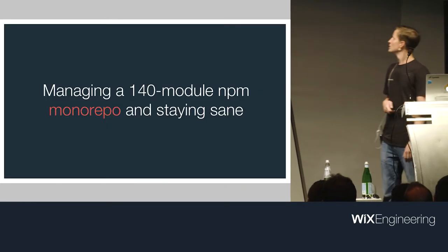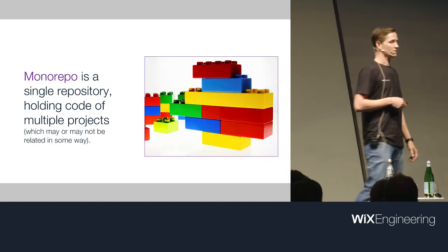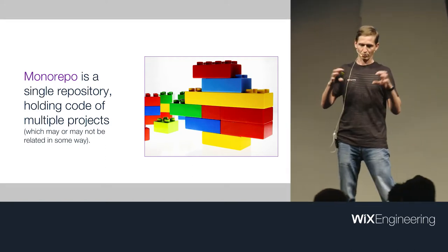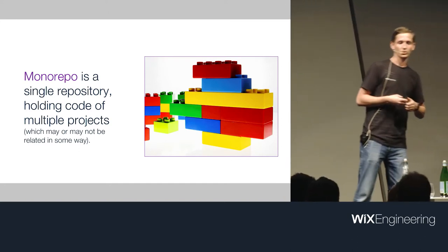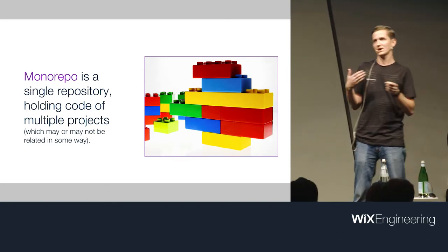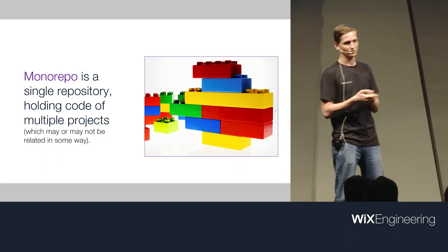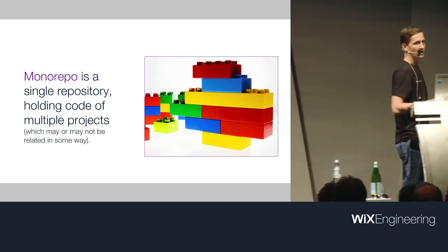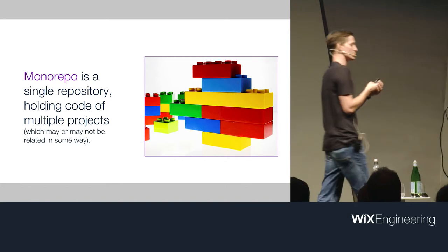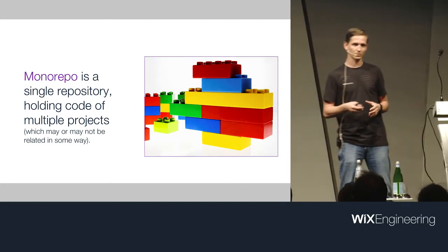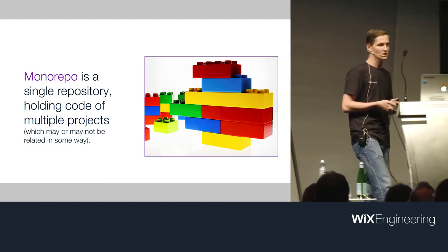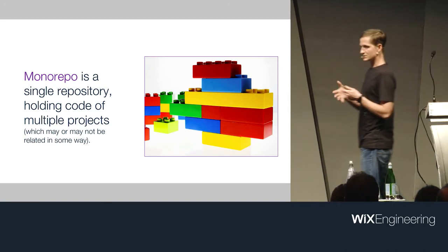Monorepo is a single repository holding code of multiple projects or modules. If you want to work with multiple modules, you have two ways: the classical way where each module resides in a separate repo — cross-cutting changes can't be done atomically — or a monorepo, where you can do an atomic change across a group of modules. In a monorepo you can have a single lint, build, and test process, it's easier to coordinate changes, and users have a single place to report issues.